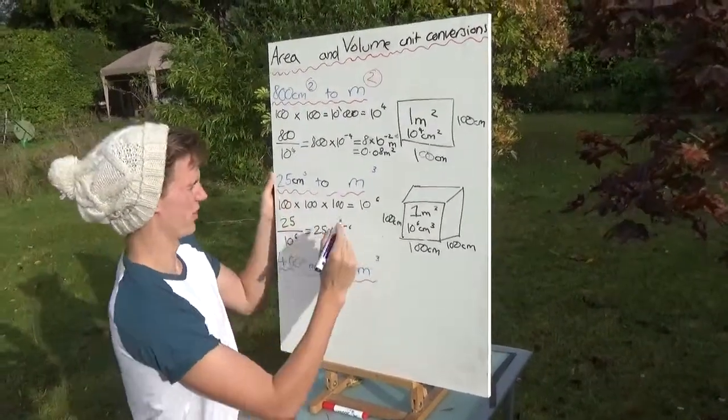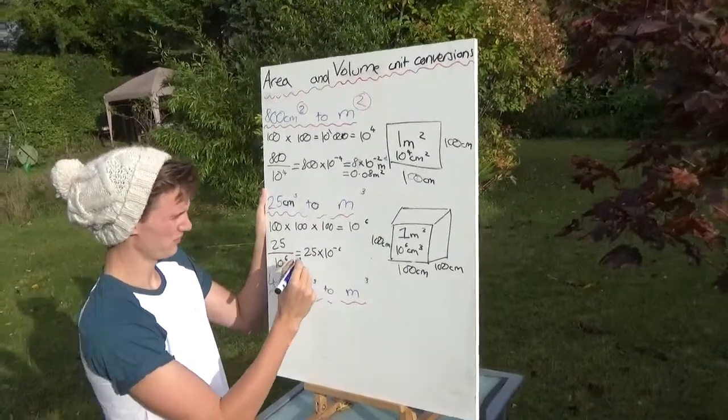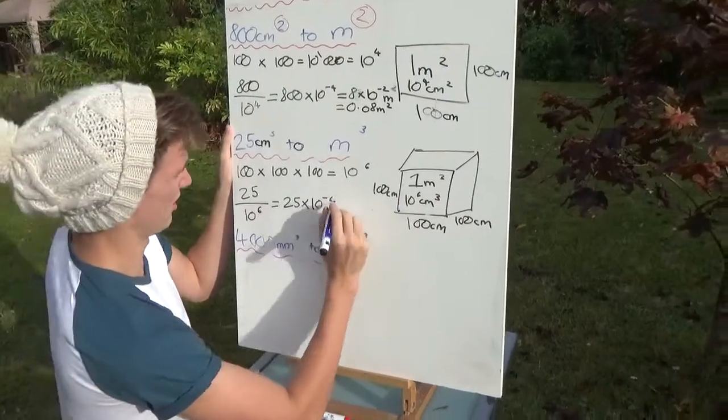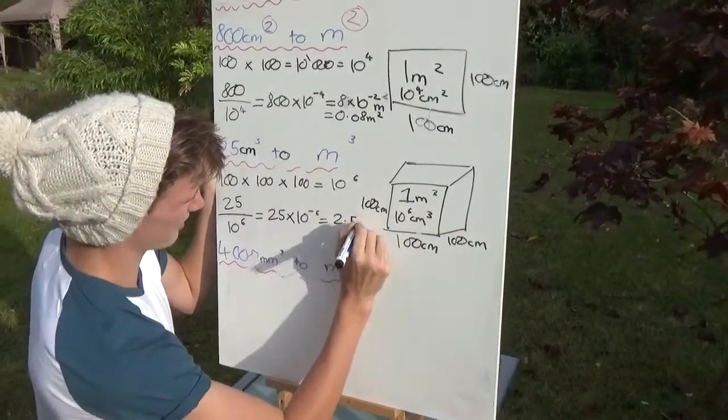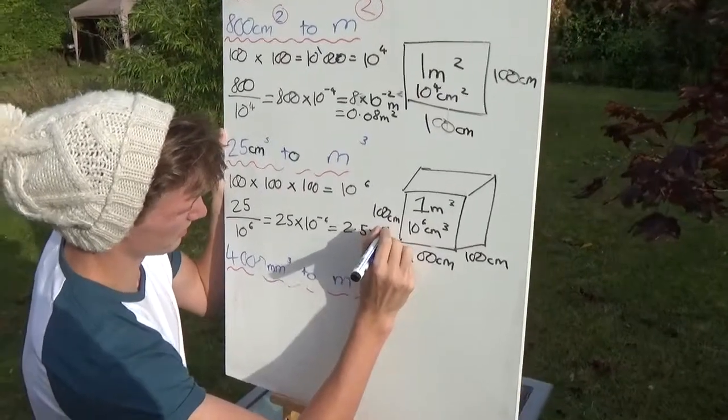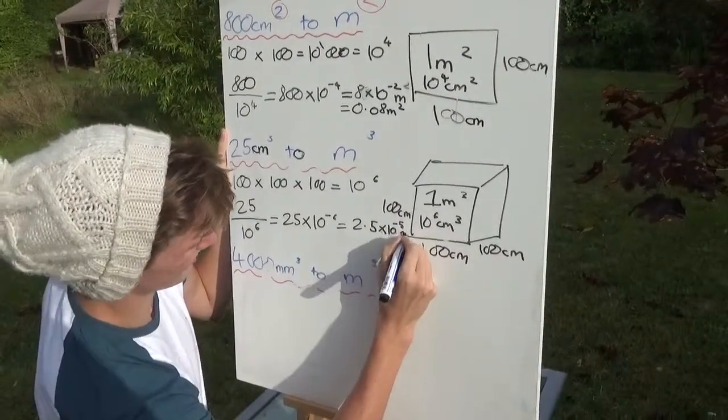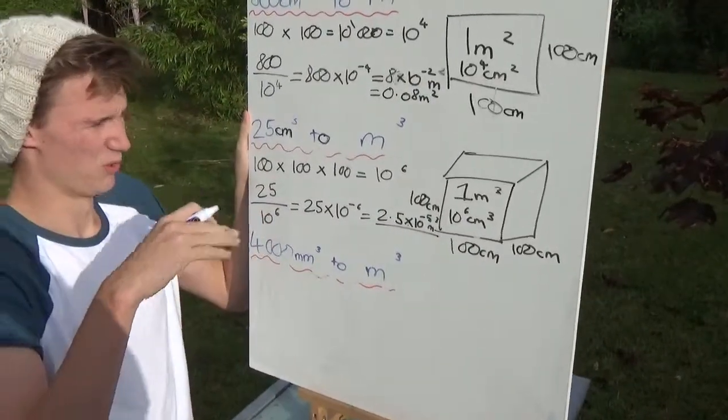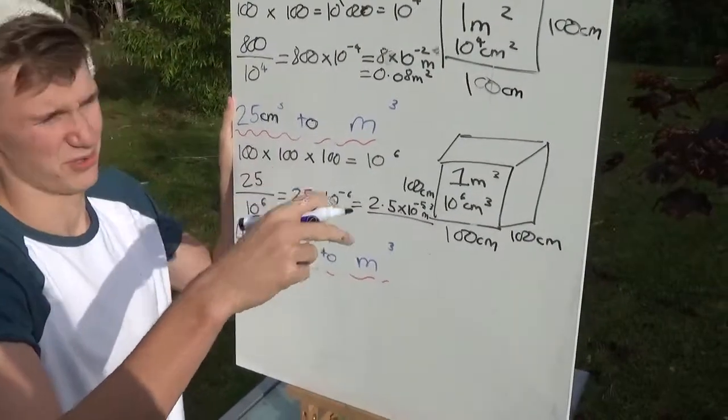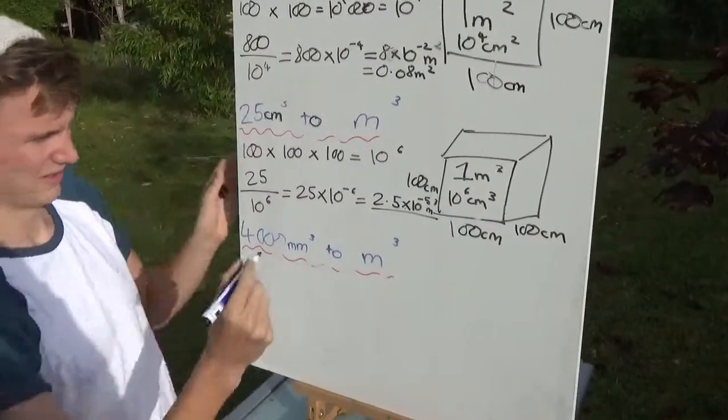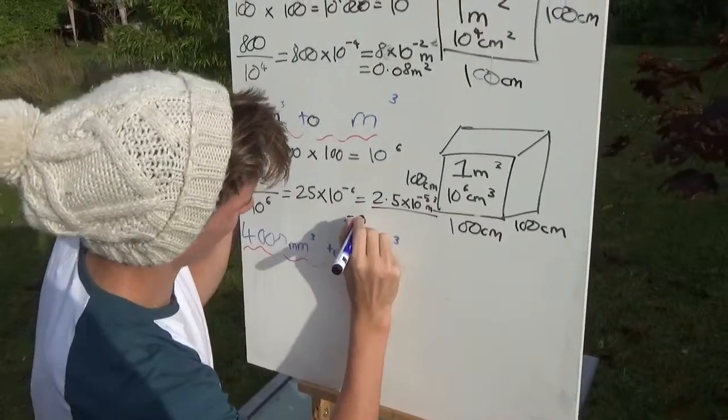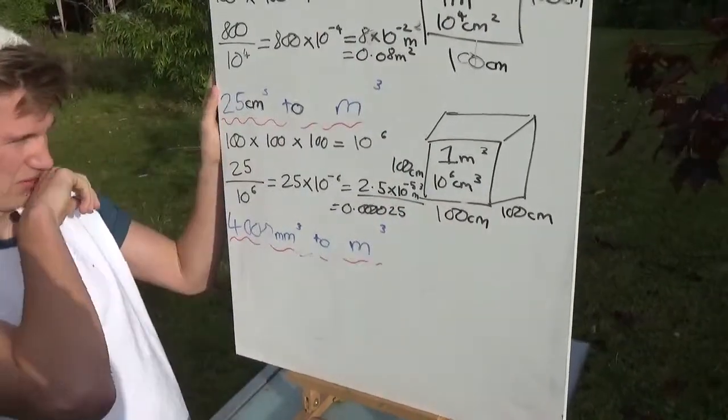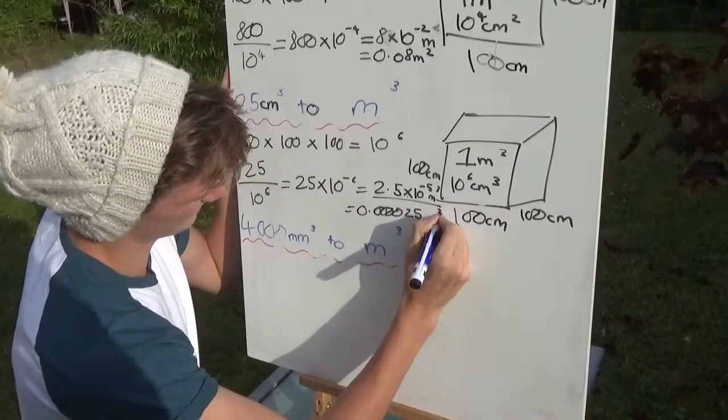Then we need to convert that into standard form, so we need to move this point along one, which means we need to decrease this by one power, which gives us 2.5 times 10 to the minus 5 meters cubed. Which would be 0.000025 as a decimal. Would you write that down please? 0.000025 meters cubed.